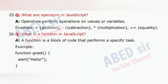Question 25: What are operators in JavaScript? Operators perform operations on values or variables. Examples: + (addition), - (subtraction), * (multiplication), == (equality).